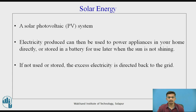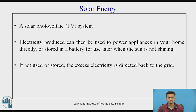The main part of a solar power plant is the solar photovoltaic (PV) system, which changes sunlight into electricity. Sunlight is captured by solar panels and converted into usable electricity by means of an inverter. The electricity produced can then be used to power appliances at home directly, stored in a battery for use when the sun is not shining, or the excess electricity can be directed back to the grid for use at another location.